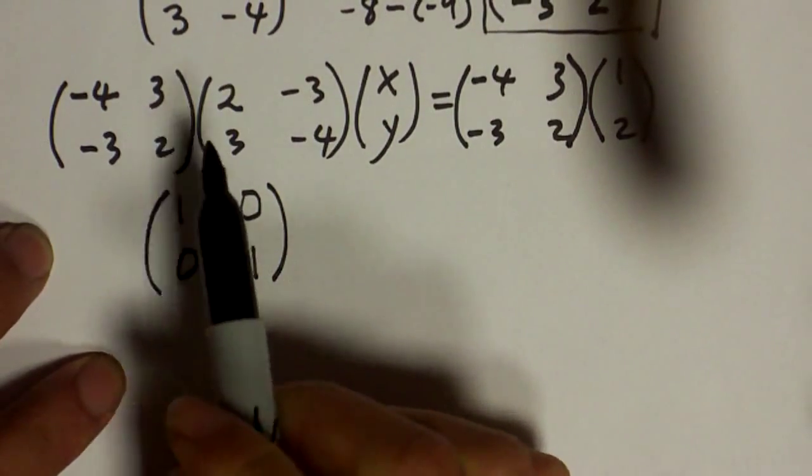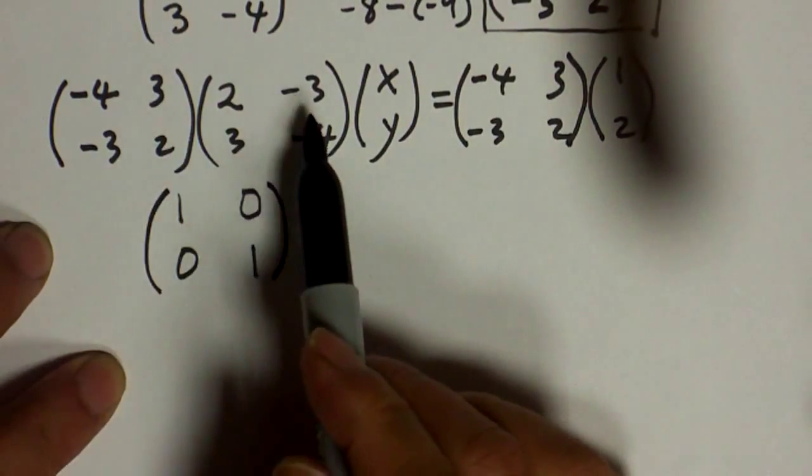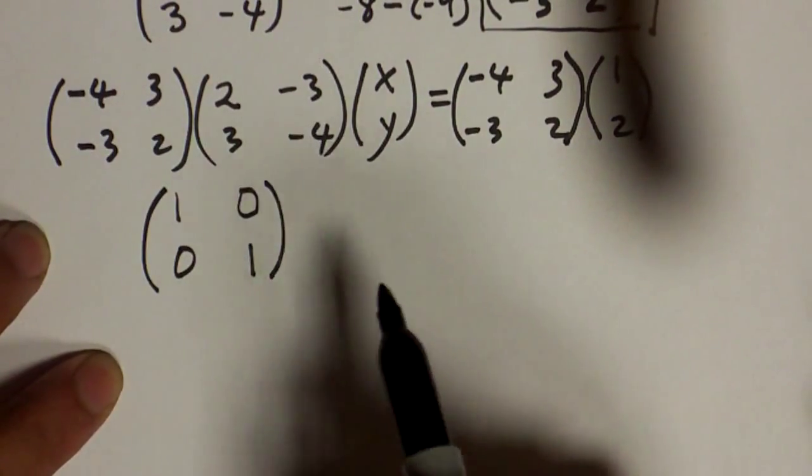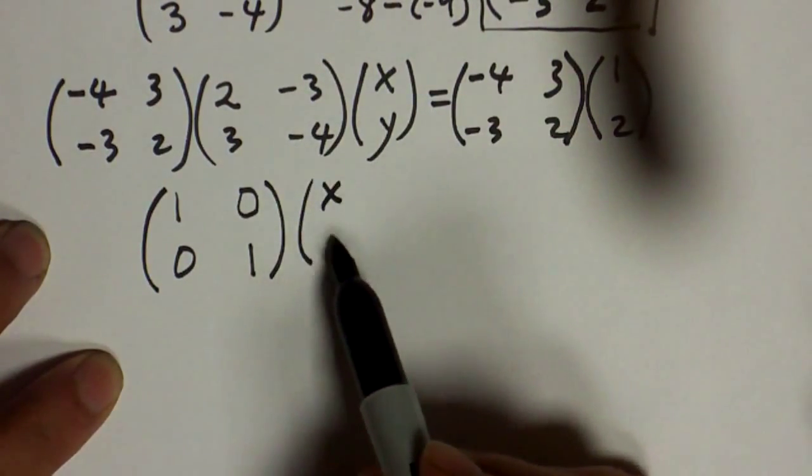Why is that? Well, we are multiplying the inverse of a matrix to the original matrix, and we learned that when that happens, we just get the identity matrix. So that's what we get on the left side.